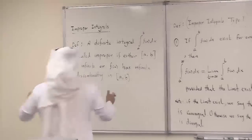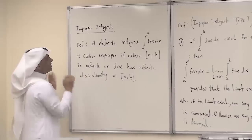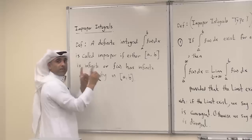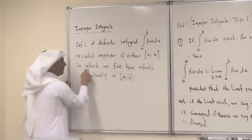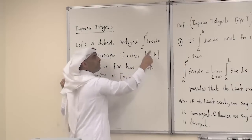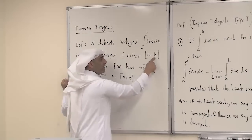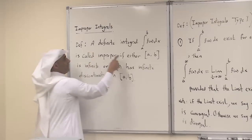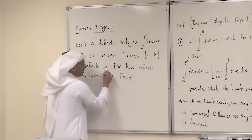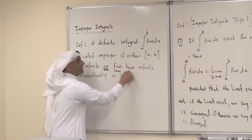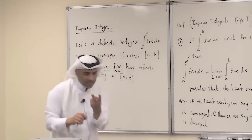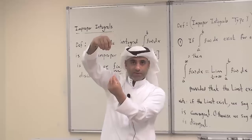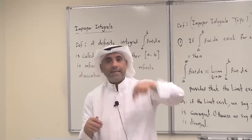Let's define improper integrals now. A definite integral from a to b of f(x) dx is called improper if either the interval itself is infinite — meaning a could be minus infinity, or b can be infinity, or both — or if the integrand has an infinite discontinuity. So we have two types of improper integrals: the first if the interval is infinite, the second if the function has an infinite discontinuity.